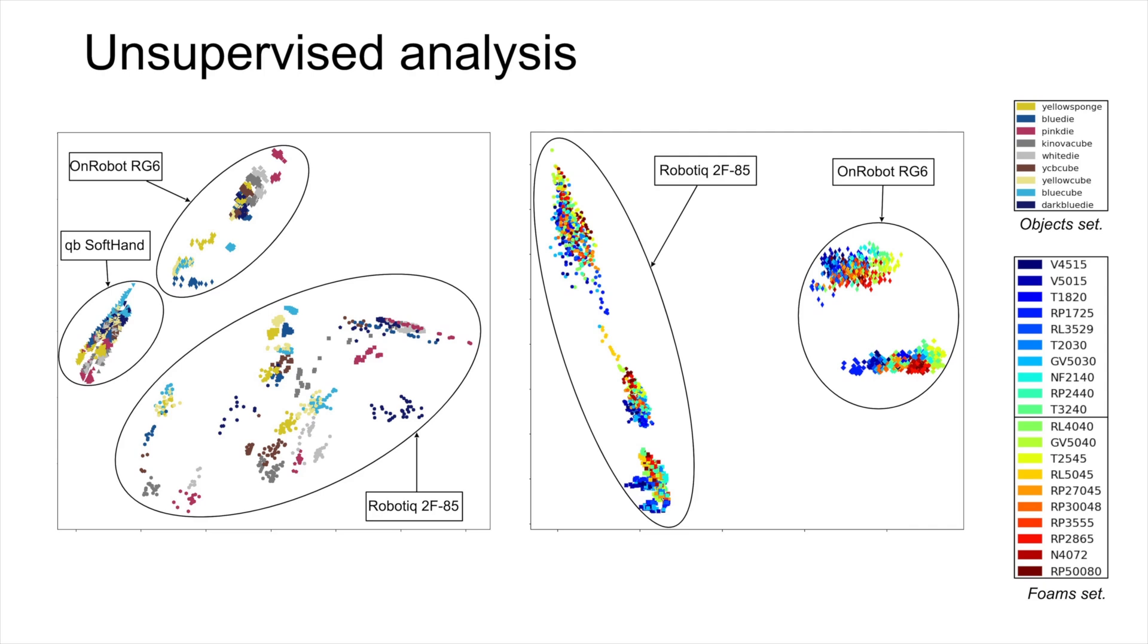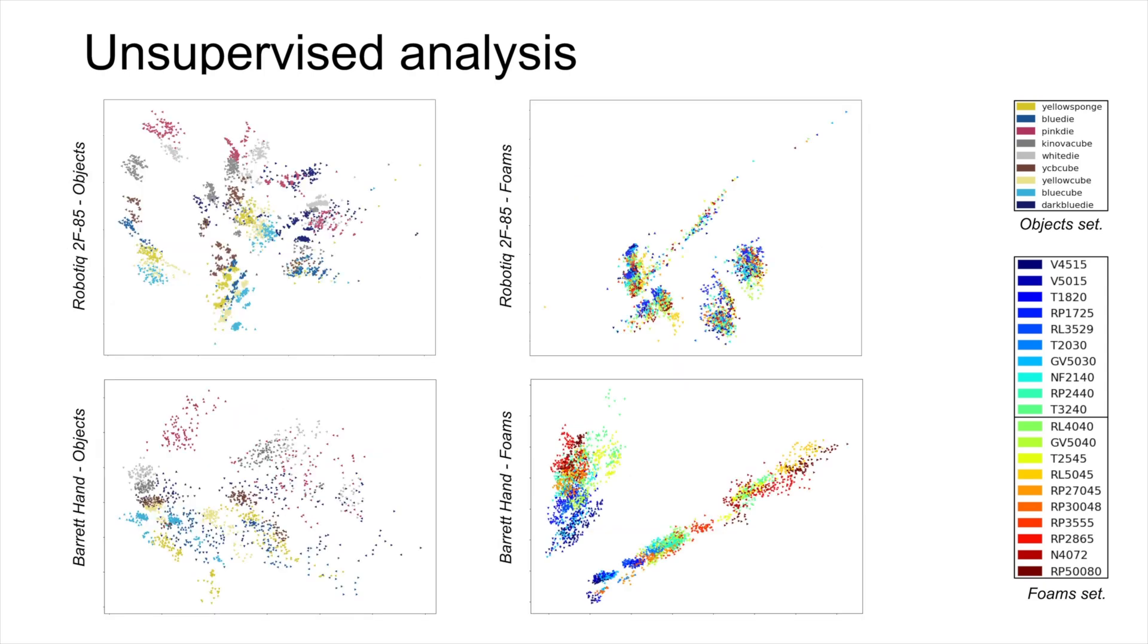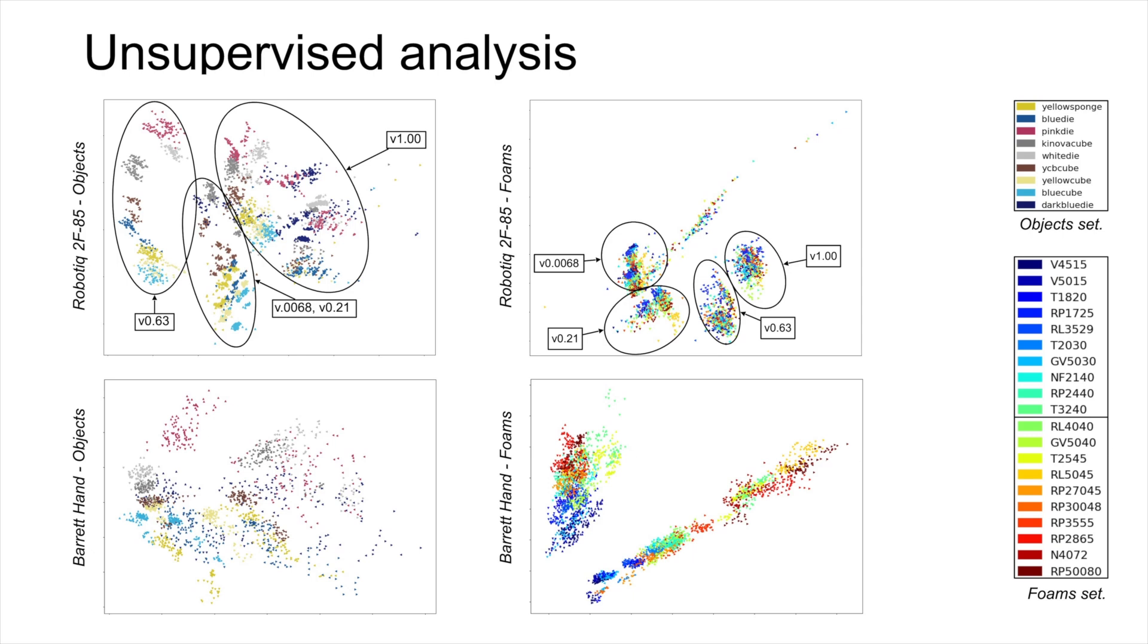This puts in question the feasibility of learning or generalizing across different robot embodiments. For every gripper individually, the first principal component was primarily influenced by action parameters such as compression speed or grasping configuration, while the second component was linked to object characteristics like stiffness or volume.